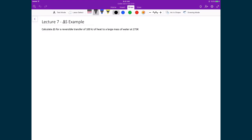Let's do a quick example where we calculate the change in entropy using this definition. So in this example, we're talking about a reversible transfer of 100 kilojoules of heat into a large mass of water at 273 Kelvin. And so, going back to our definition of entropy, we have ΔS = Qrev/T.